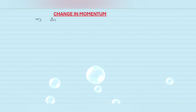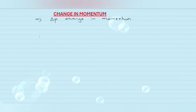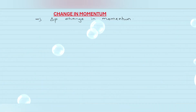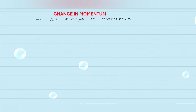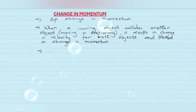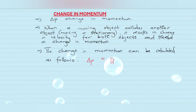Change in momentum is represented by delta p. When a moving object collides with another object — whether that other object is moving or stationary — it results in a change in velocity for both objects and therefore a change in momentum. If the velocity changes, the momentum is also going to change. The mass of the two objects will remain constant.